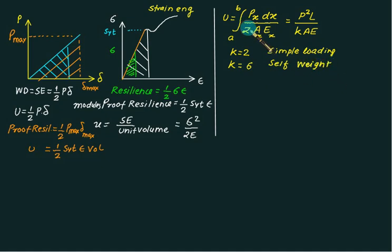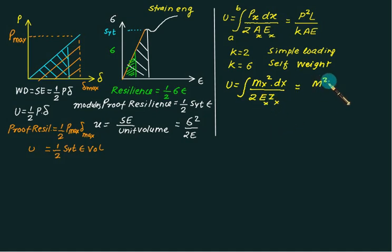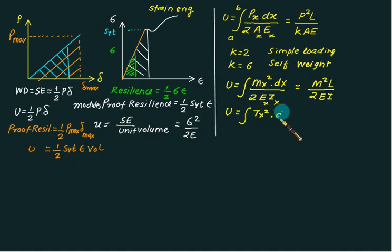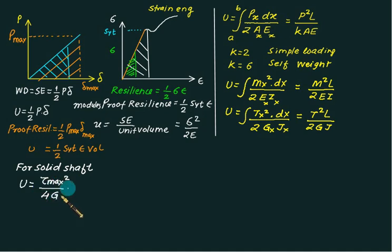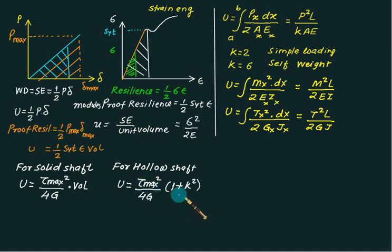The strain energy due to bending is the integral of M(x)² dx / (2EI(x)), and for a constant section this becomes M²L/(2EI). For variable sections, use the integral form. For torsion, the strain energy is the integral of T(x)² dx / (2G(x)J(x)), and for constant values it is T²L/(2GJ). For a solid shaft, the strain energy stored is tau_max² / (4G) × volume, whereas for a hollow shaft it is tau_max² / (4G) × (1 + k²), where k = d_i / d_o.